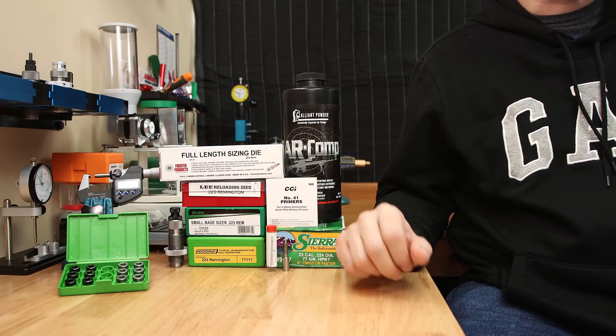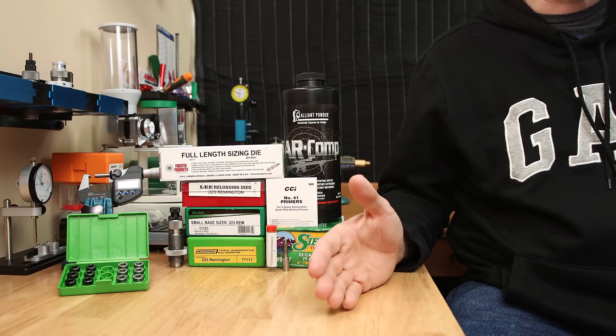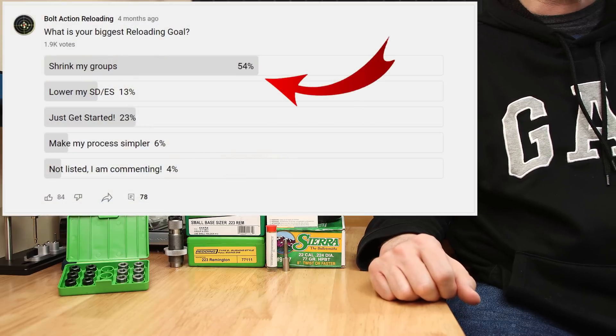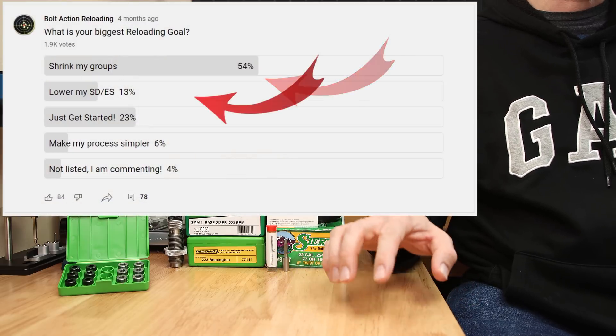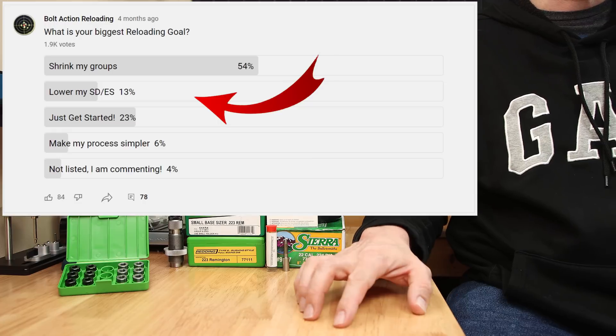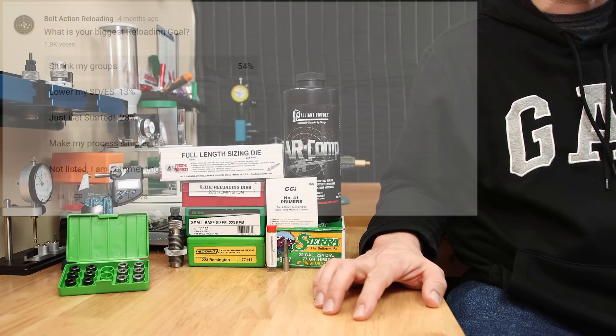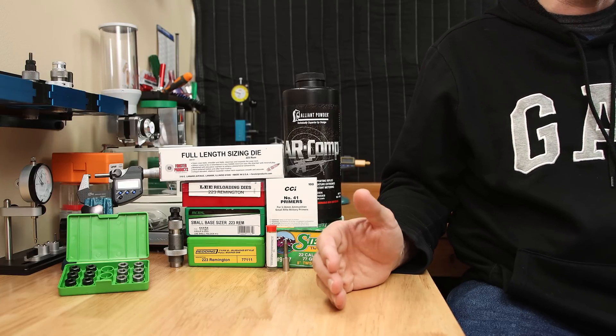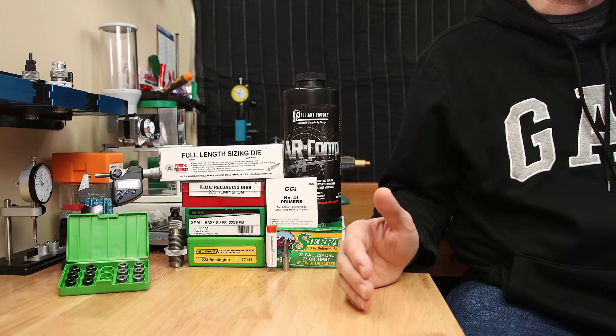Now first understanding what better really means is important. I asked you guys a little while back what your biggest reloading goals were. Over 50% of you wanted to shrink your groups and only 13% your main goal was to lower your extreme spread and standard deviations. These goals frankly make sense because unless you shoot every round over a chronograph it's easier to improve what you can measure.